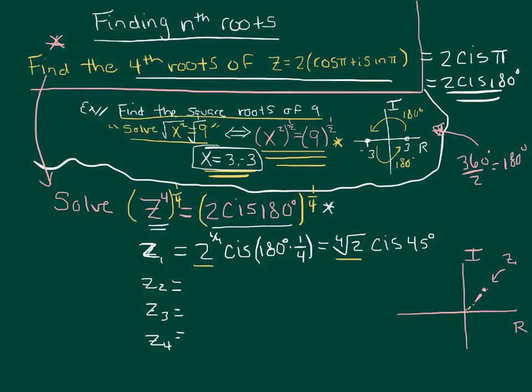So to find out how my answers in this problem are evenly spaced, I do 360 divided by four, because I was taking the fourth root or I was finding fourth roots. And that equals 90 degrees. So that's what I add.